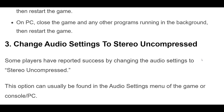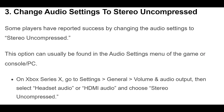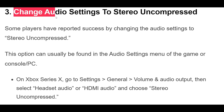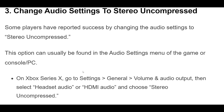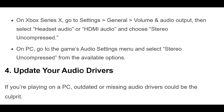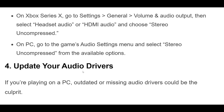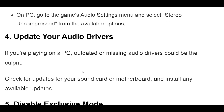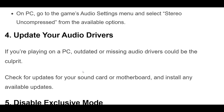3. Some players have reported success by changing the audio settings to Stereo Uncompressed. This option can usually be found in the audio settings menu of the game or console or PC. On Xbox Series X, go to Settings, General, Volume and Audio Output, then select Headset Audio or HDMI Audio and choose Stereo Uncompressed. On PC, go to the game's audio settings menu and select Stereo Uncompressed from the available options.